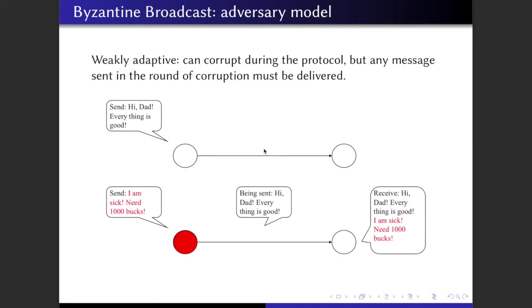The second adversary model is the weakly adaptive adversary model. A weakly adaptive adversary can corrupt any user at any time of the protocol. However, after it corrupts a user, it cannot erase any message already sent by that user in the round of corruption.